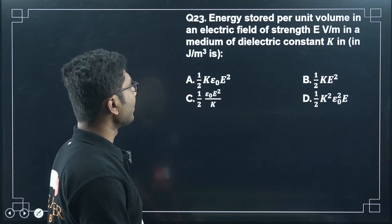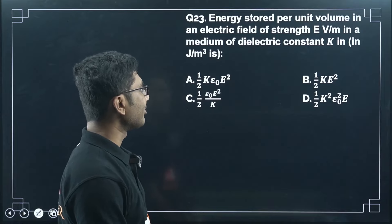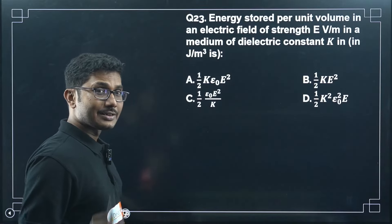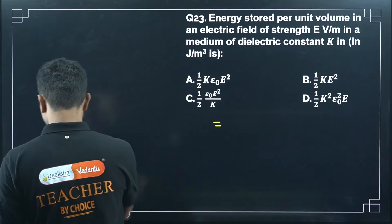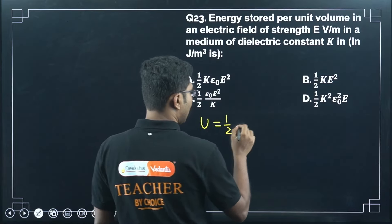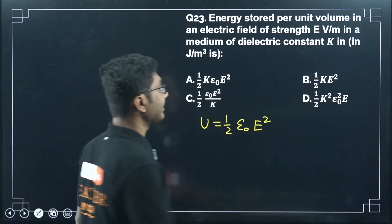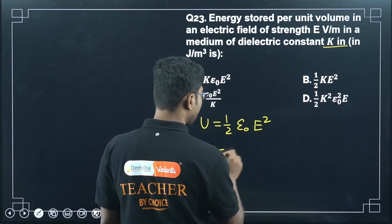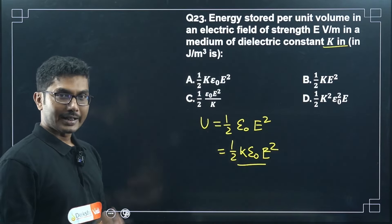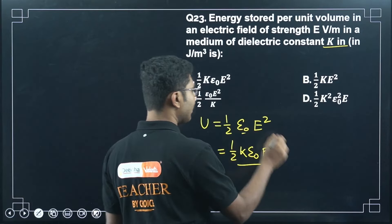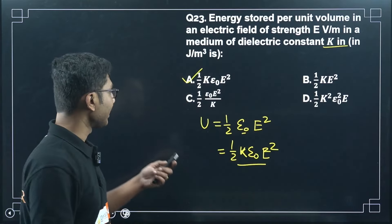Question 23: energy stored per unit volume in an electric field of strength E in a medium of dielectric constant K. Without a medium, energy density = (1/2)ε₀E². With dielectric constant K present, it becomes (1/2)Kε₀E². The dielectric increases the energy density by factor K. So the answer is (1/2)Kε₀E² joules per cubic meter.